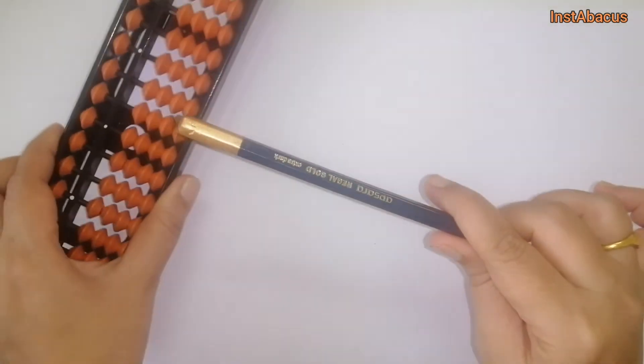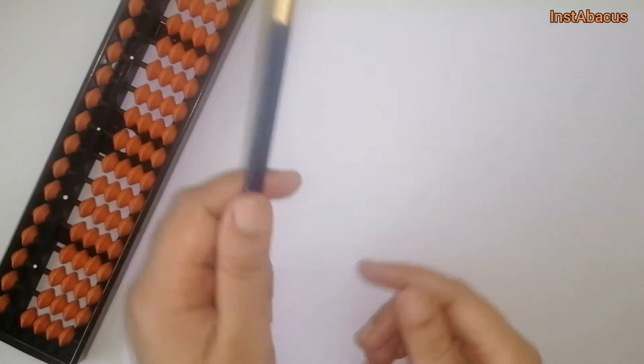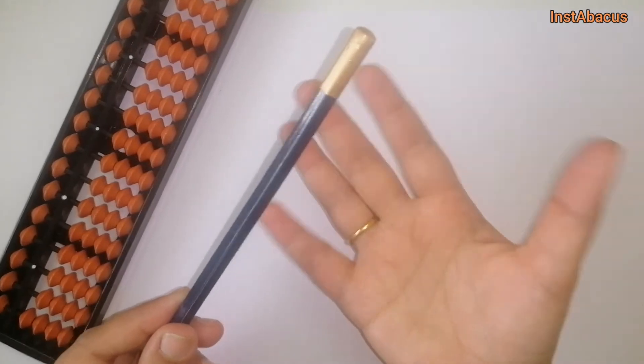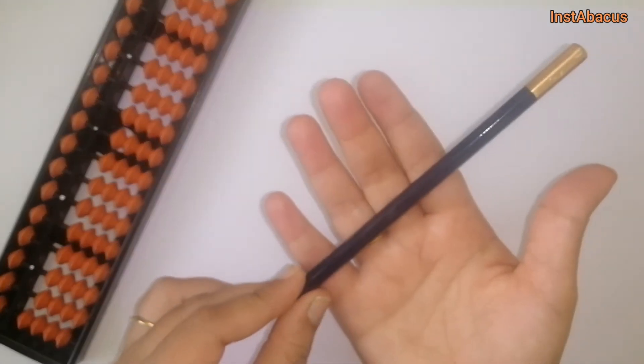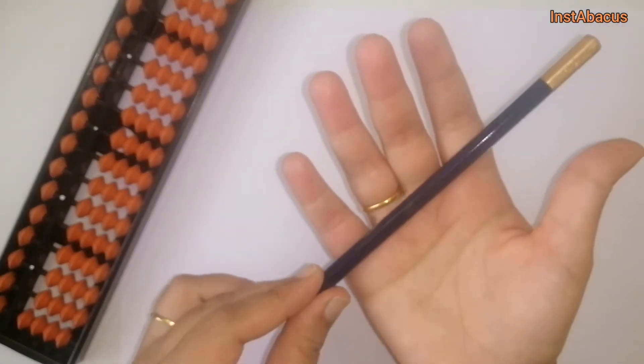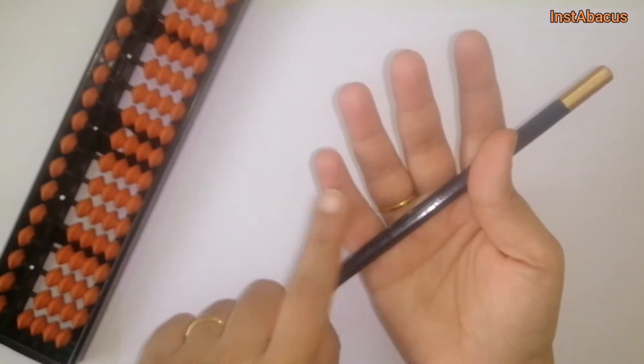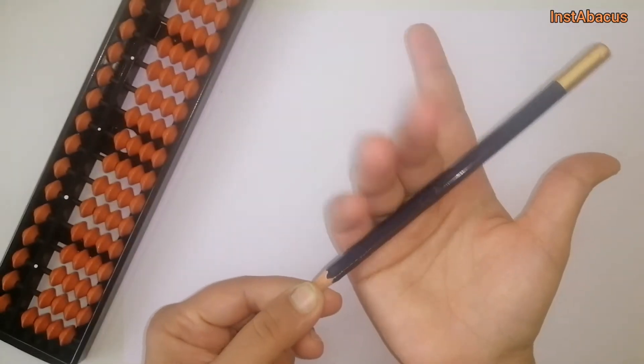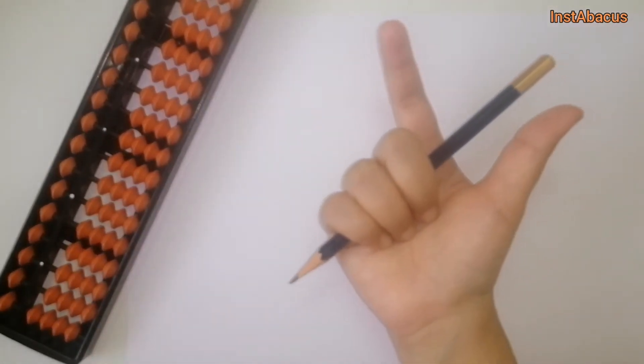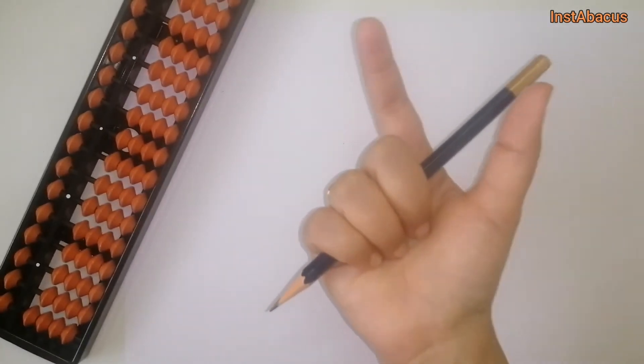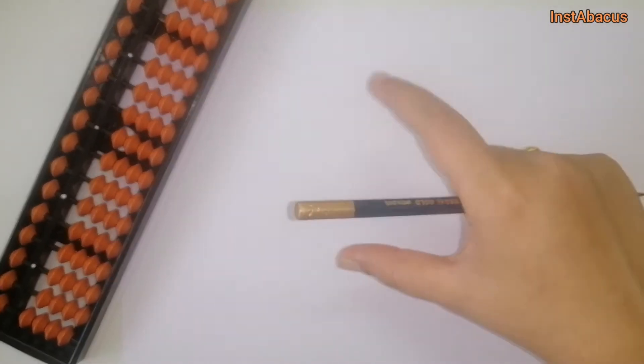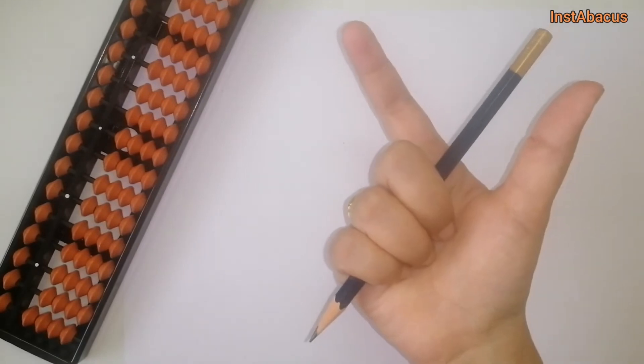Let's keep our abacus aside. This is your pencil. If your dominant hand is your right hand, you're going to hold your pencil like this with the tip towards the little finger, holding it with these three fingers so that your two fingers can remain free for the movement of beads on the abacus.